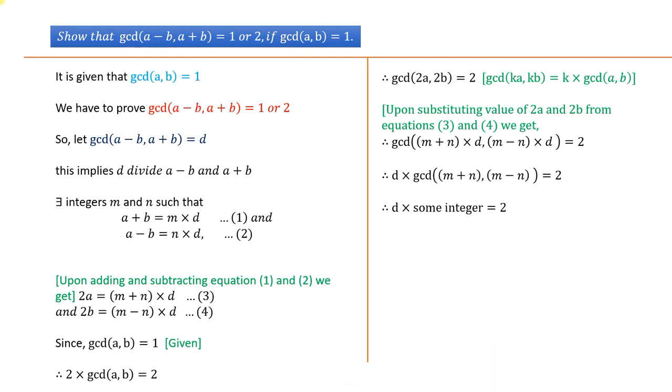Therefore, d times some integer equals 2, because GCD of any number will be an integer.